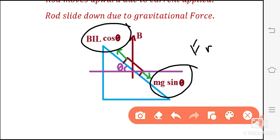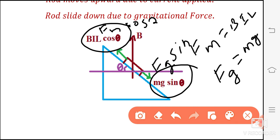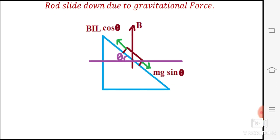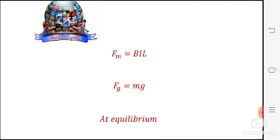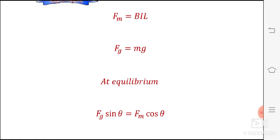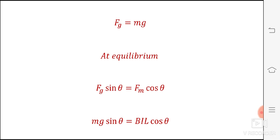So fm is equal to bil. Bil cos theta is equal to fm cos theta. Here fg sin theta is the downward force. So fg sin theta is equal to fm cos theta.